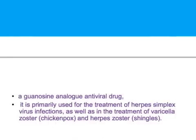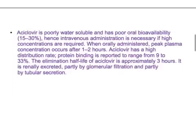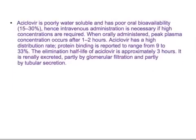Acyclovir is a guanosine analog antiviral drug primarily used for the treatment of herpes simplex virus infection, as well as varicella zoster — that is chickenpox — and herpes zoster, which is shingles. Acyclovir is poorly water soluble and has poor oral bioavailability, hence intravenous administration is necessary if high concentrations are required.